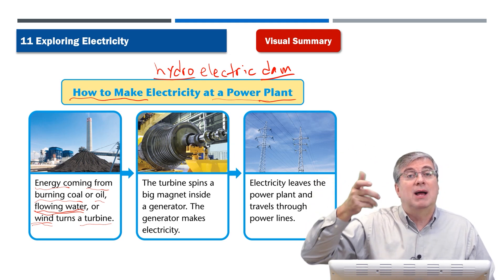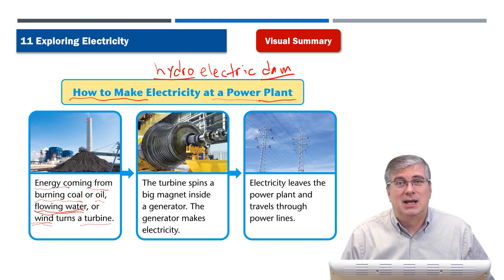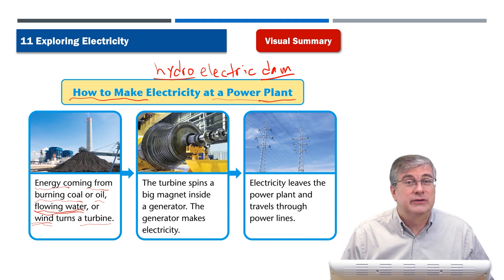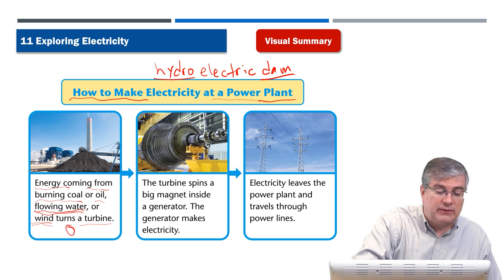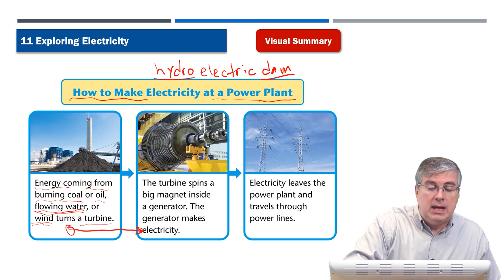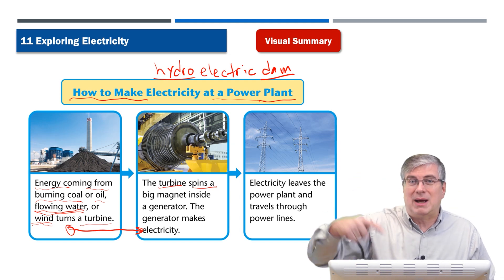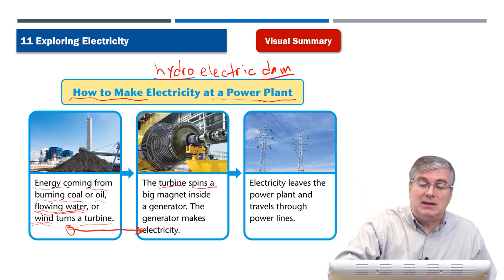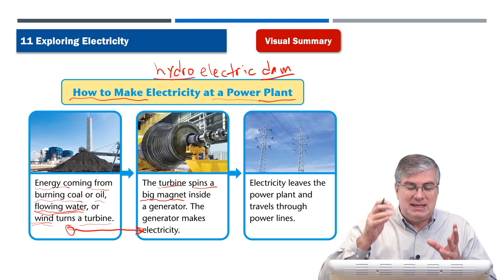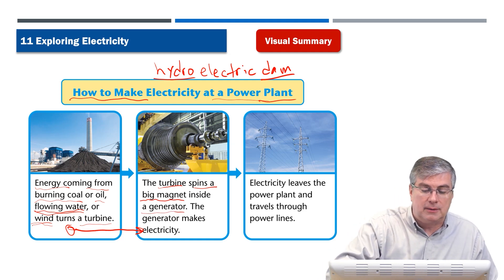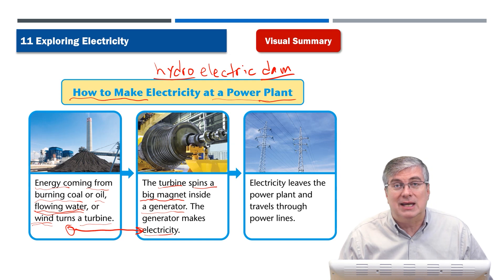So we have our source of energy — what does it do? The turbine spins. The turbine spins a big magnet inside a generator, and the generator makes electricity. The turbine is inside the generator — that's how electricity is made.